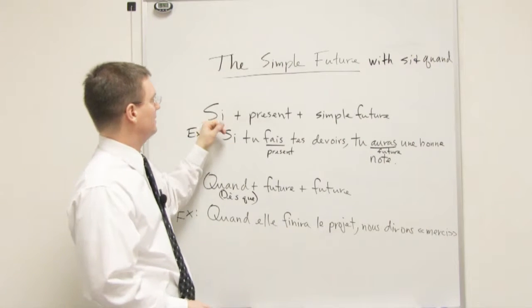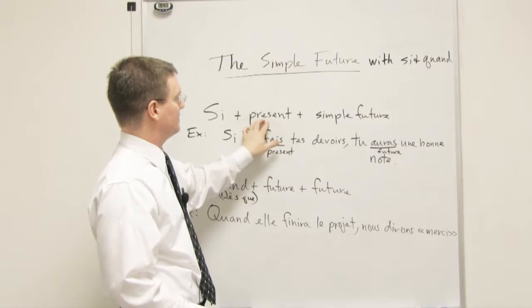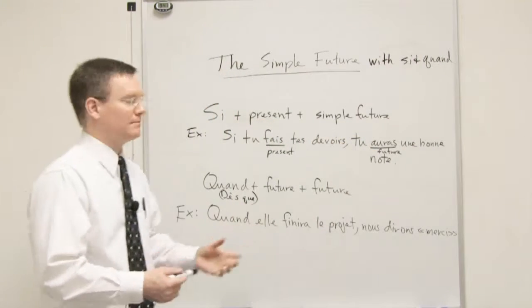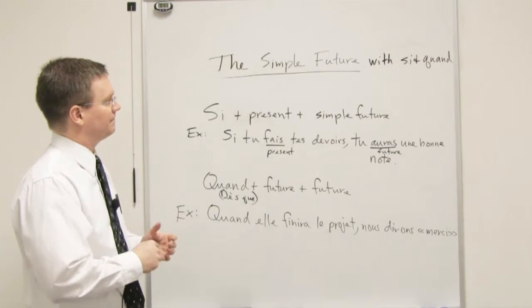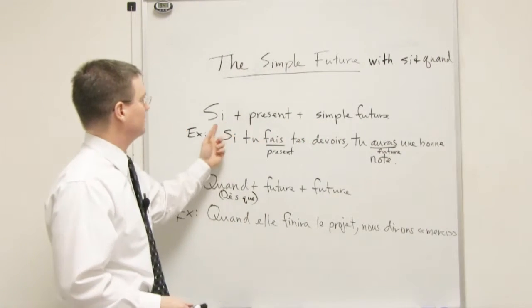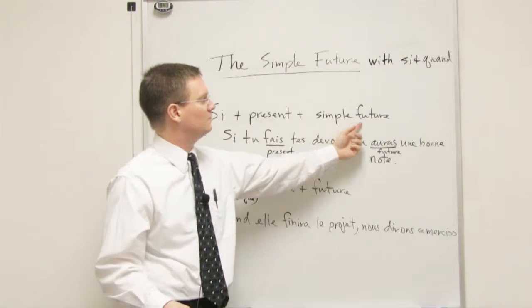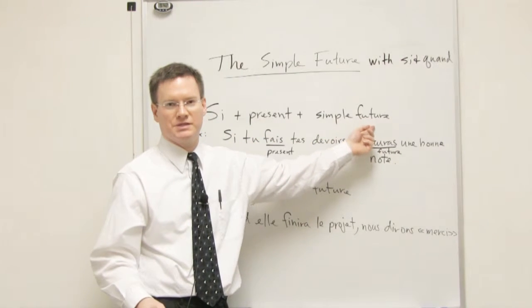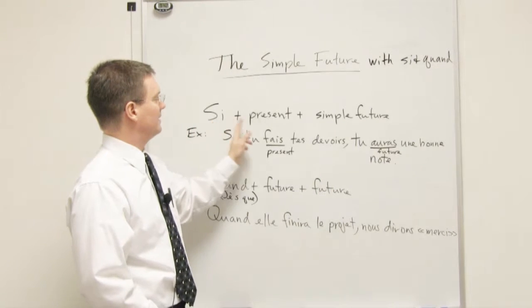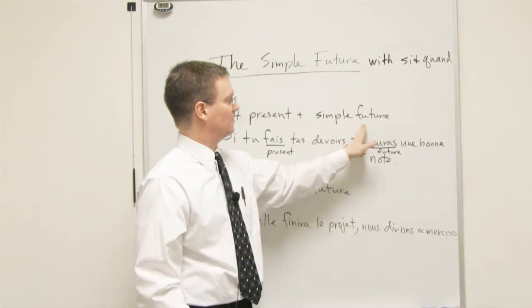This basically means if something happens, then something will happen. It's kind of a conditional relationship between these two. For example, if the weather is nice, we will, the future, simple future is usually this idea of will, we will go to the sand dunes. If it is sunny, we will go to the park.